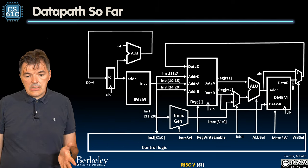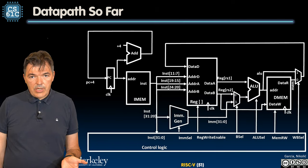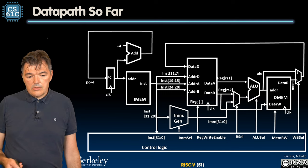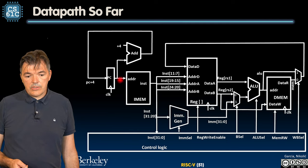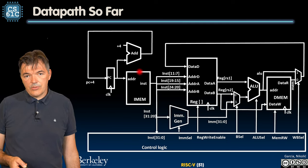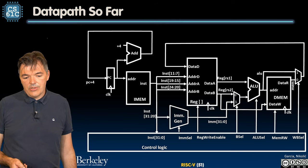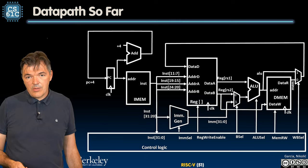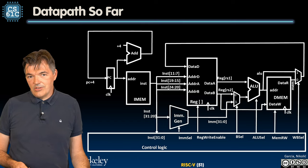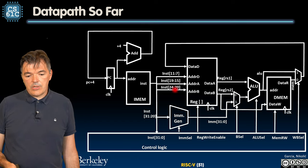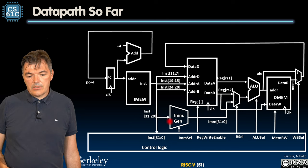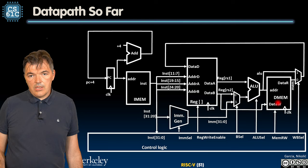Let's see how our data path looks so far. We have our program counter that so far has ability only to be updated to the next instruction which is four bytes away. We'll need to do something to enable this other update based on the outcome of the branch. We have the instruction memory, register file, immediate computation, ALU for execution, and the memory.